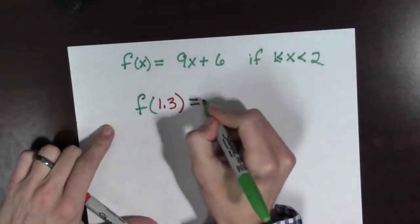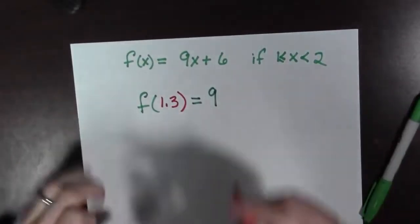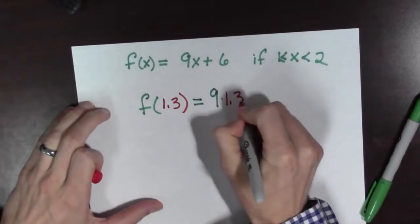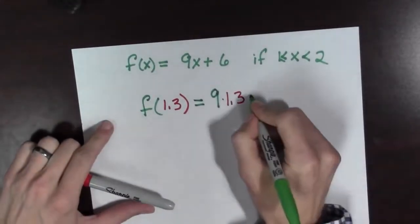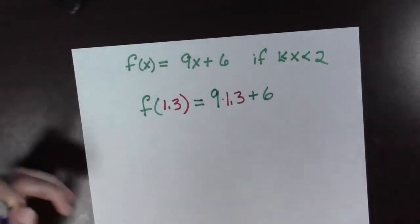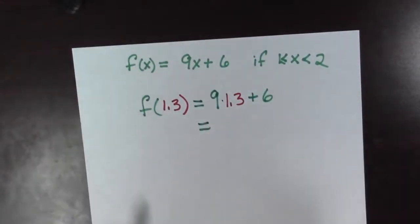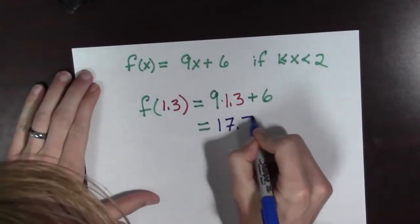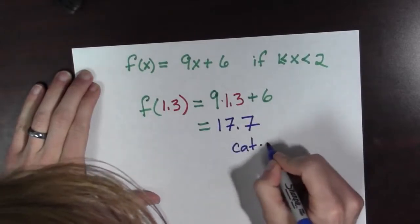So that's going to equal 9 times 1.3 plus 6. And doing the arithmetic, we see that this is equal to 17.7 cat years. So this is great. Now we know that Roxy, a cat who's 1.3 human years old, is in fact 17.7 cat years old. And we used a function to do this.